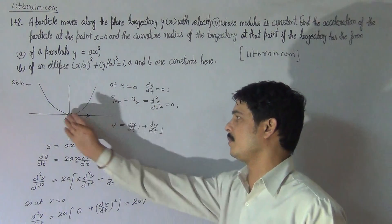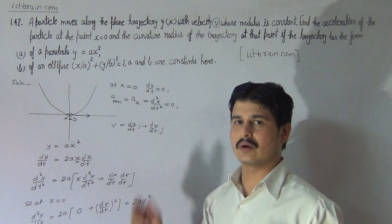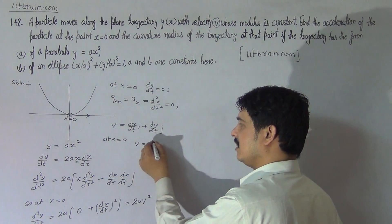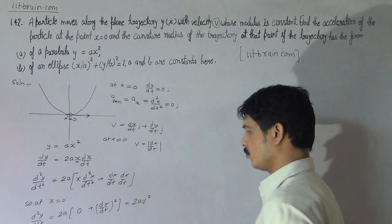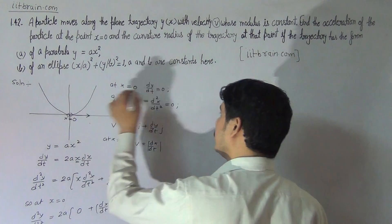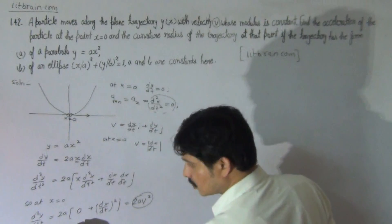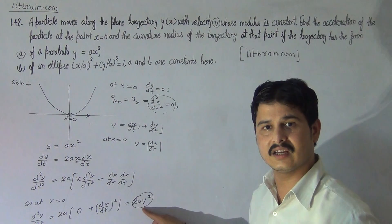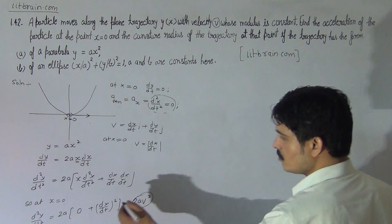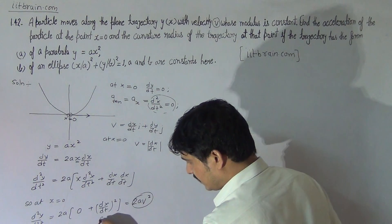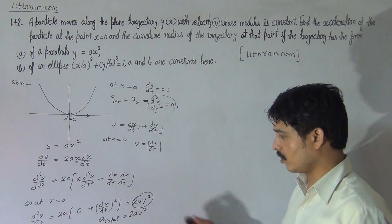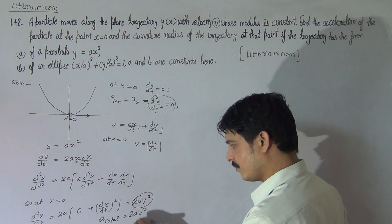Velocity will be along the tangent only, because the tangent is along the x-axis. So dx by dt will be there. At x equal to 0, v will equal dx by dt, and the modulus of dx by dt equals v. So d squared y by dt squared gives the acceleration along the y-axis. And since at this point there is no acceleration along the x-axis, this can also be taken as the total acceleration.